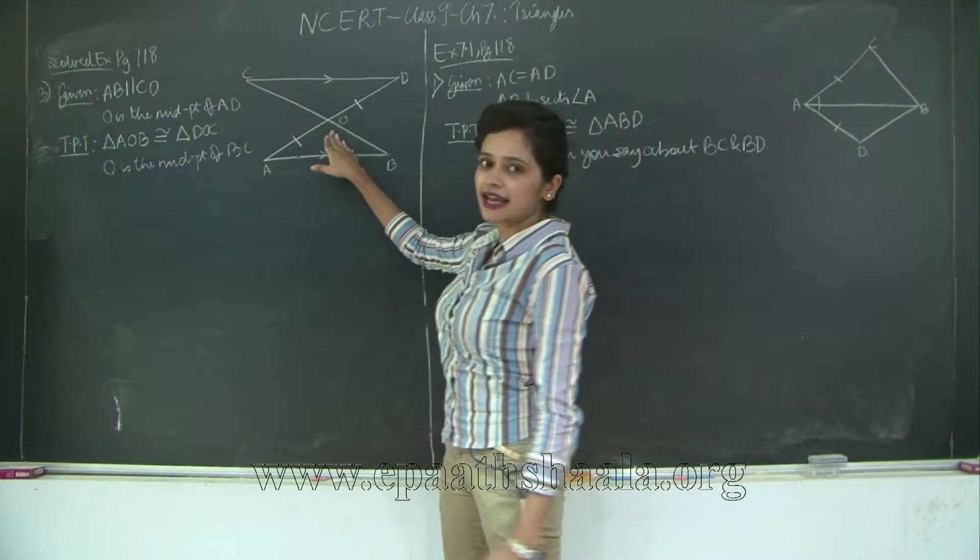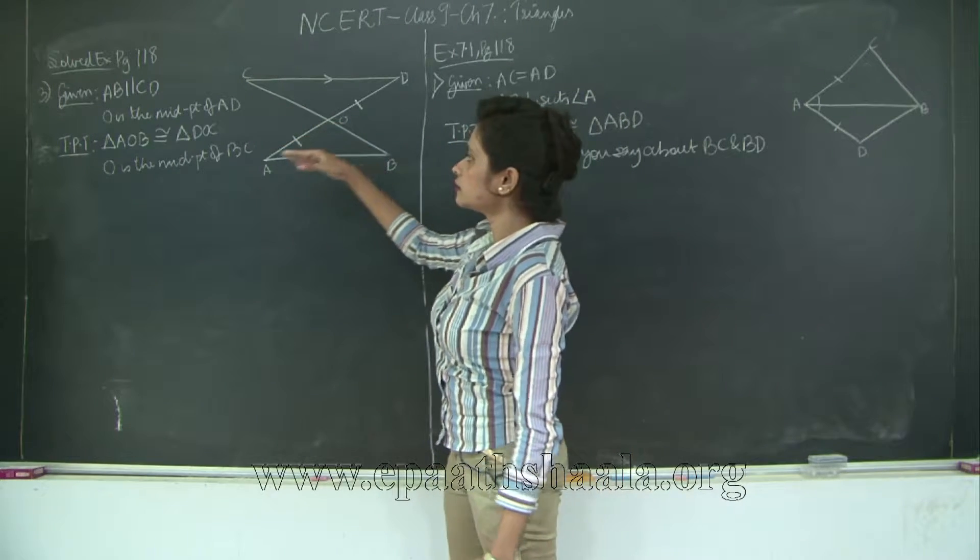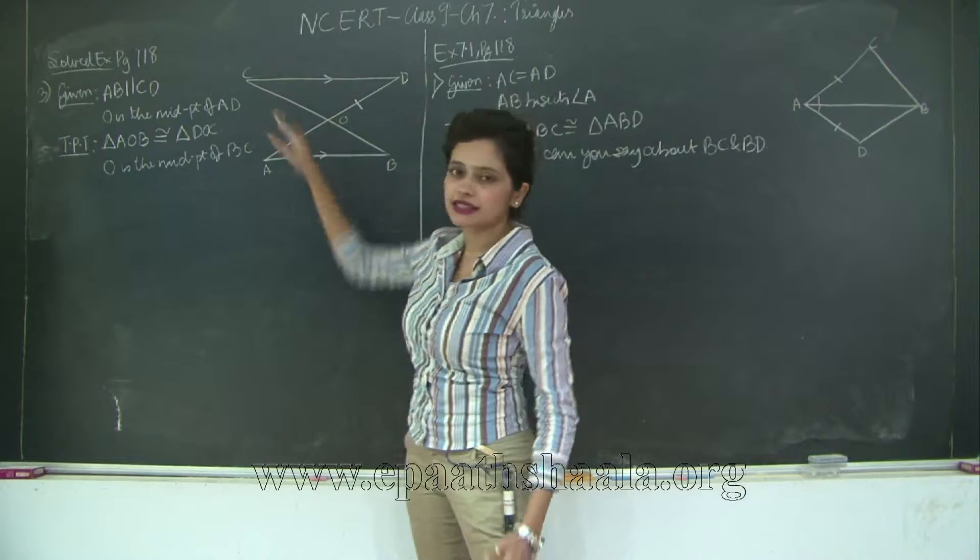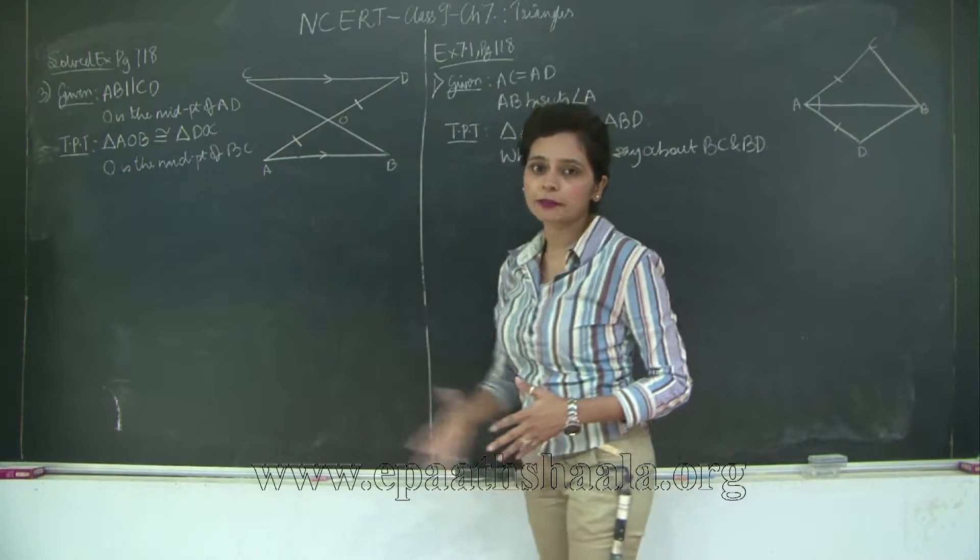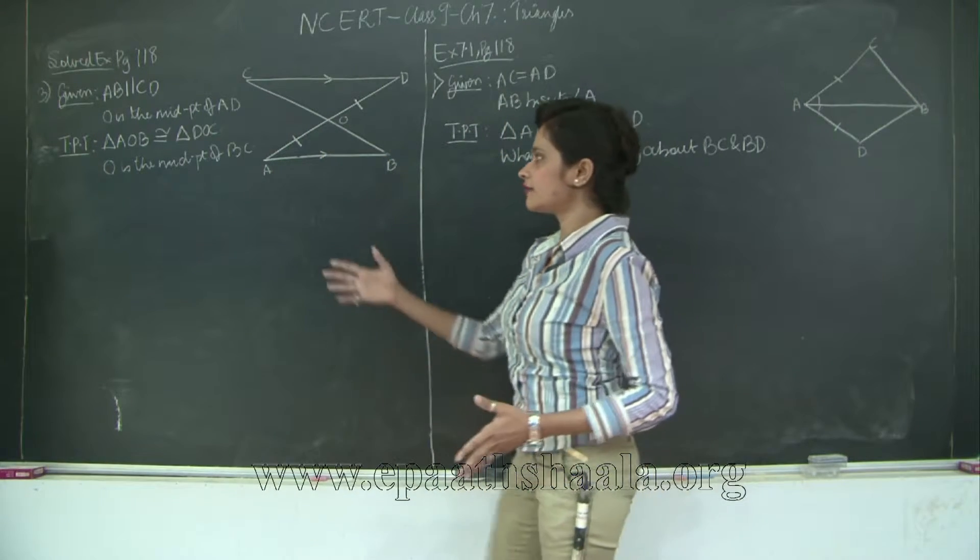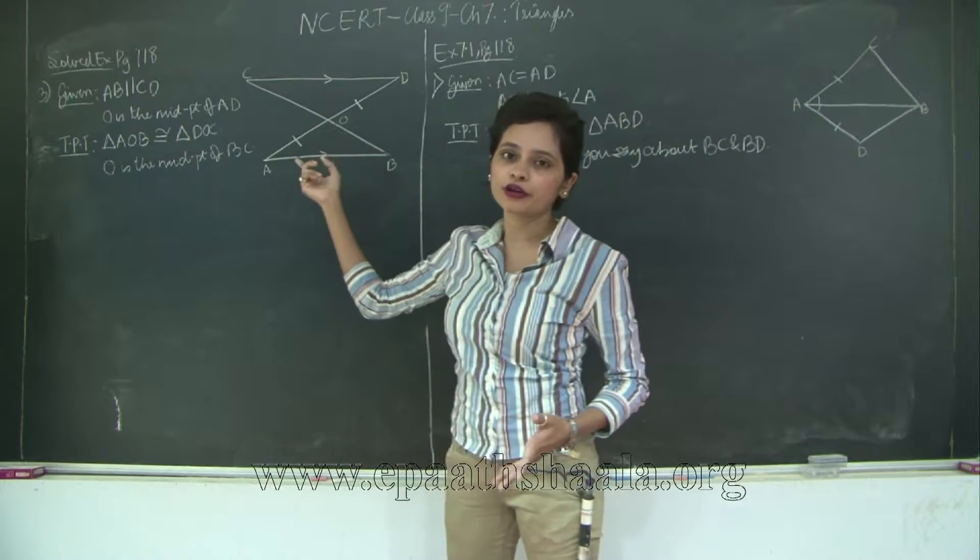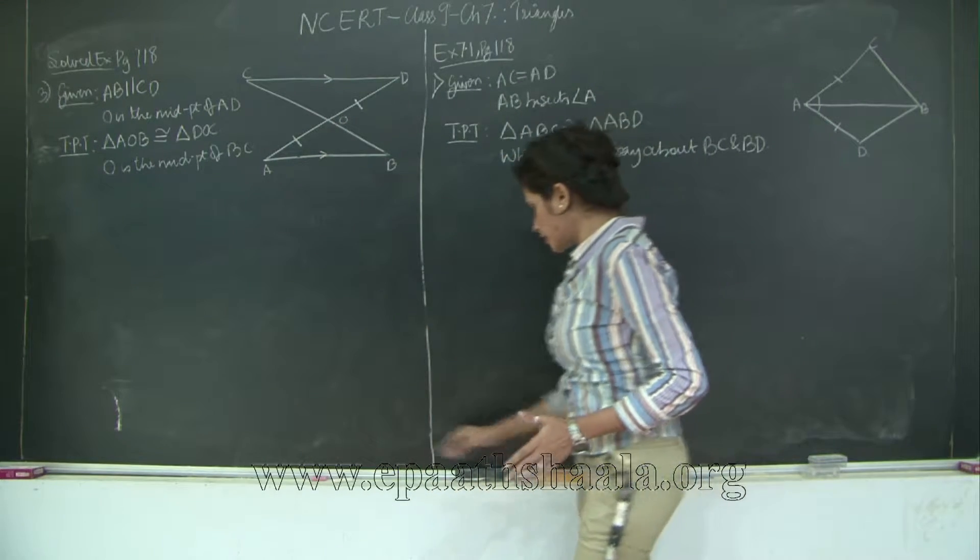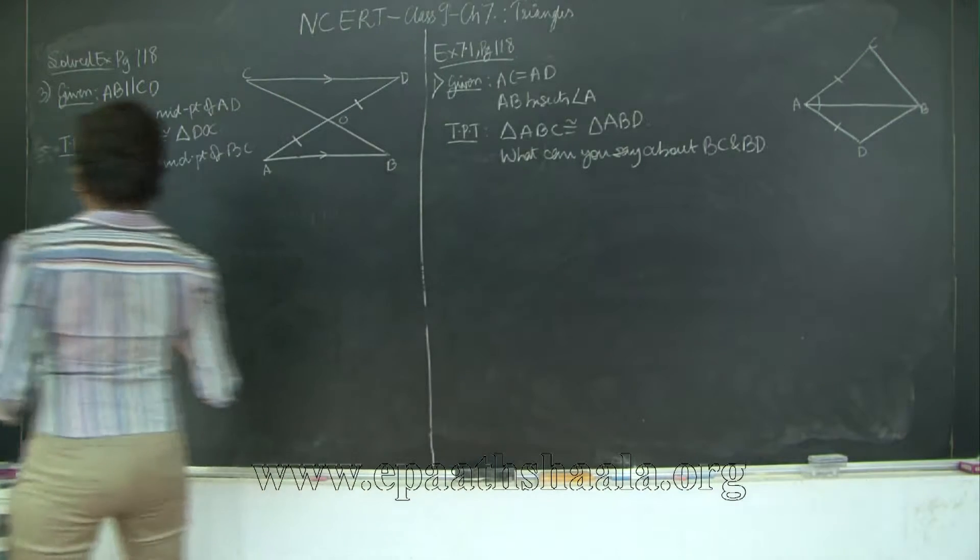Also what we can say is that OB is equal to OC. Why? Because they are corresponding parts of congruent triangles. Therefore O becomes the midpoint of BC. So let us go ahead and prove this and also write the solution.